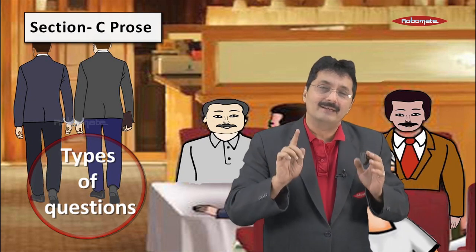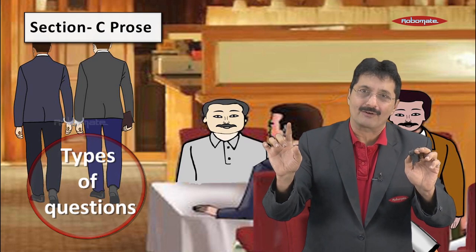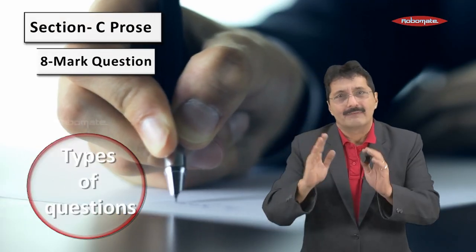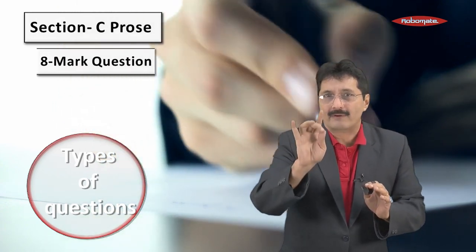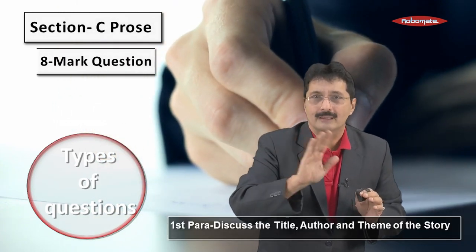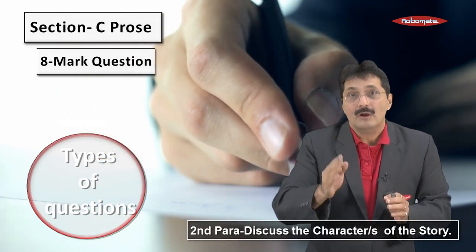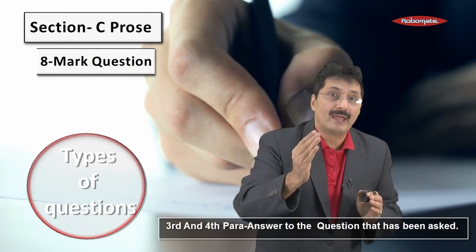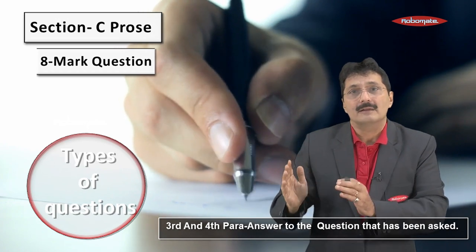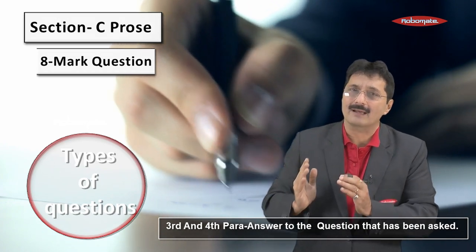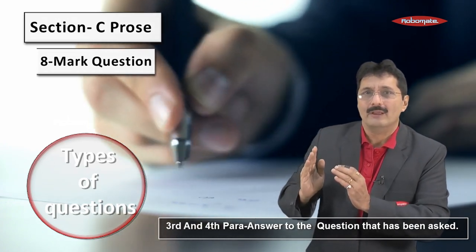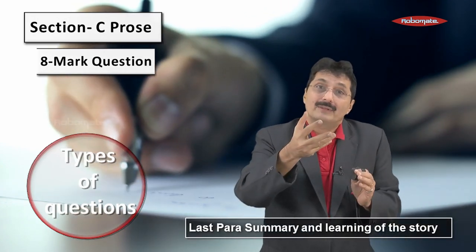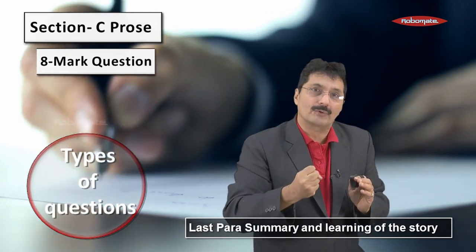These questions test your capability to present ideas in a concise manner. For the eight-mark question, divide your answer into five paragraphs: Paragraph 1 — author, title, theme. Paragraph 2 — discuss the character or characters. Paragraphs 3 and 4 — the actual answer to the question asked. Paragraph 5 — conclusion with the summary and learning of the story.